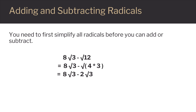The square root of 4 is the whole number 2. So the square root of 4 times the square root of 3 is the same as 2 times the square root of 3. The square root of 3 must stay because it cannot be simplified. Now both numbers have a square root of 3 in them, so they can be combined. Take the coefficients 8 and 2: 8 minus 2 is 6, so you're left with 6 square root of 3.